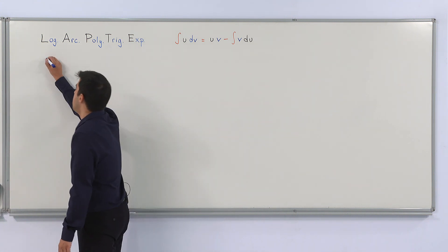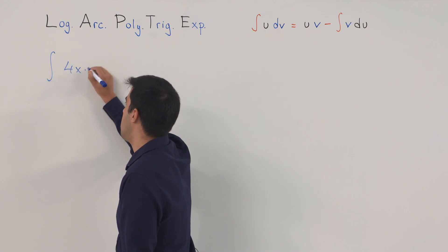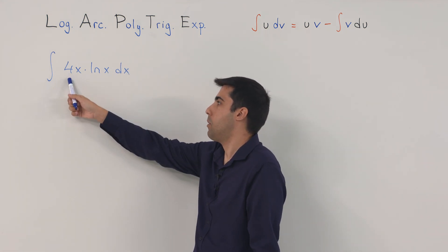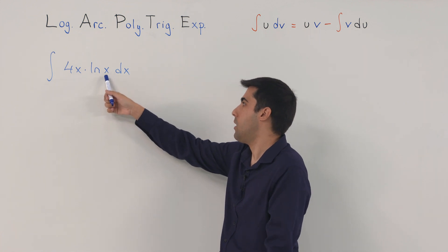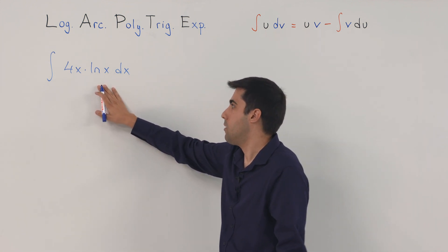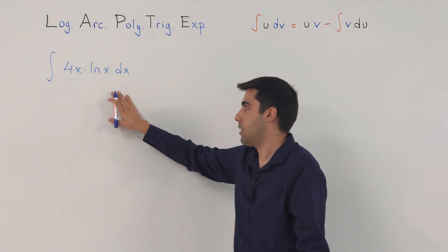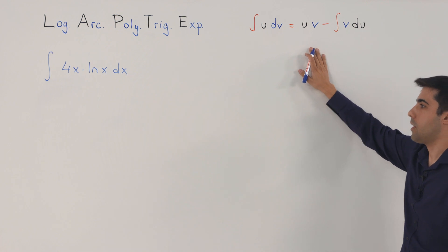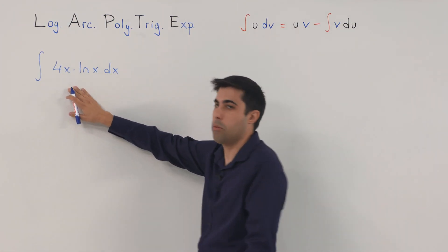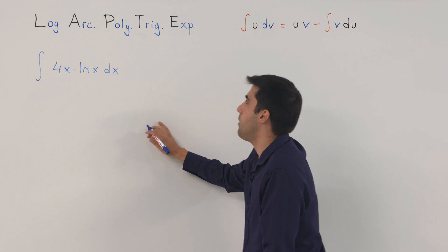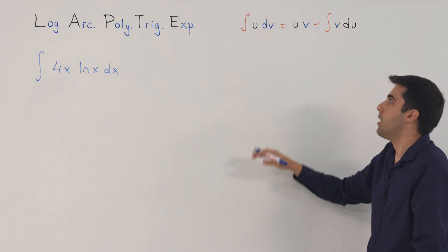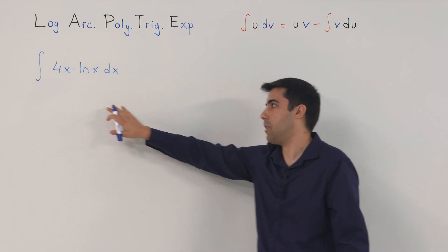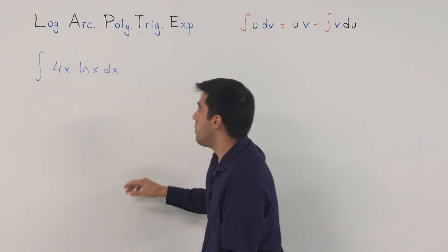Let's start with the example: integral of 4x times ln(x) dx. Here we have the product of a polynomial 4x and a logarithmic function ln(x). We don't know how to solve this integral directly. However, using the integration by parts formula, we can overcome this integral of a product. We have to choose which function to call u and which to call v.